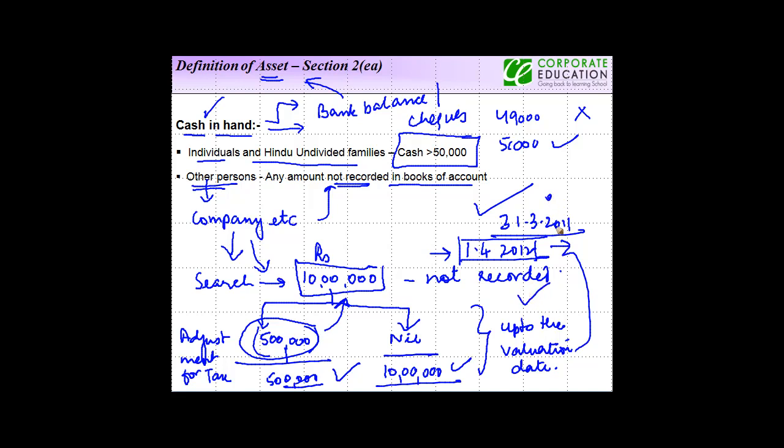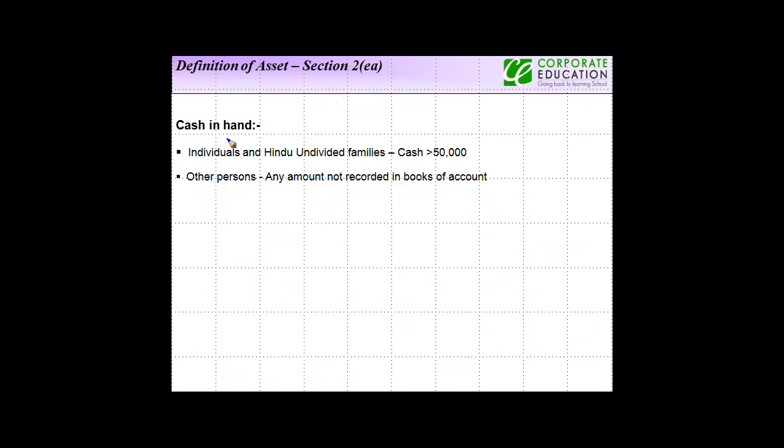To summarize: cash in hand is treated as an asset for wealth tax purposes for individuals and HUF where it exceeds 50,000. Cash in hand does not include bank balances and checks. For other persons liable to wealth tax, like companies, any amount not recorded in the books of accounts is treated as an asset for wealth tax purposes.